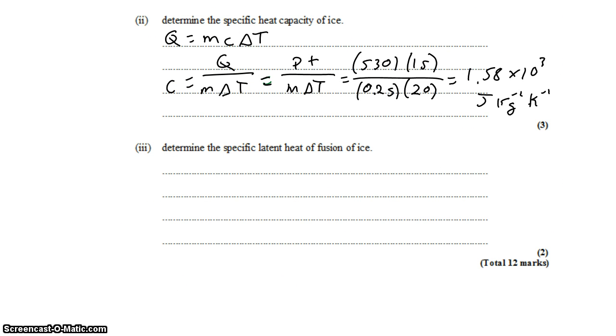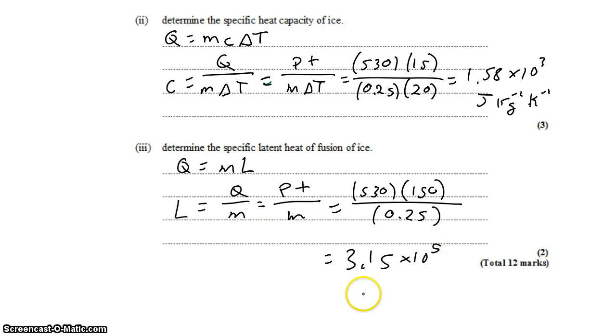Which means if I want to determine the specific heat of fusion for the ice, I can go to Q equals ML, or L equals Q on M. Well, the total energy input into the ice is the rate at which energy is input times the time for which it's input. So that's again 530, this time for 150 seconds, and divided by its mass. For a total of 3.15 times 10 to the fifth joules per kilogram.